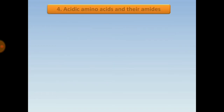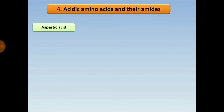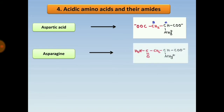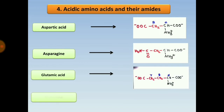The next group is acidic amino acids and their amides. There are four amino acids that are acidic in nature: aspartic acid, asparagine, glutamic acid, and glutamine. Students should note down their specific structures.